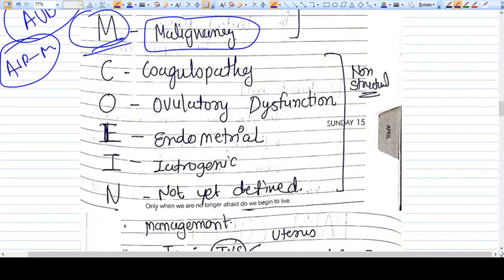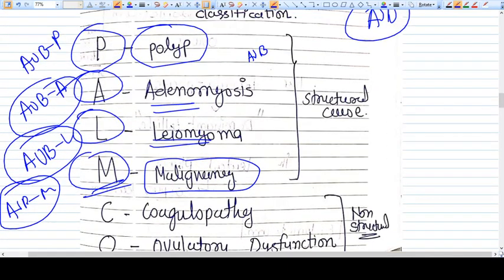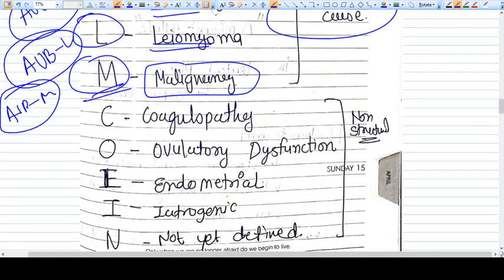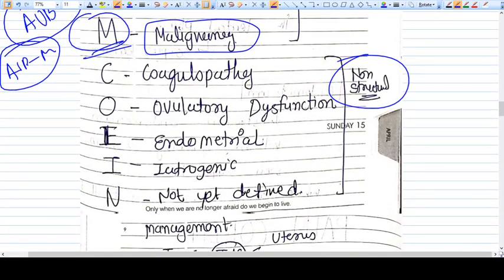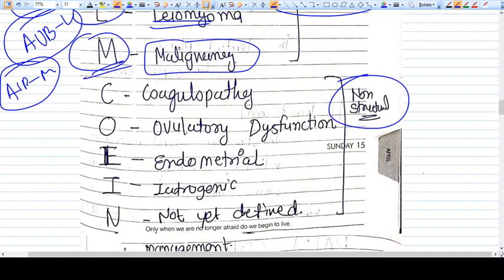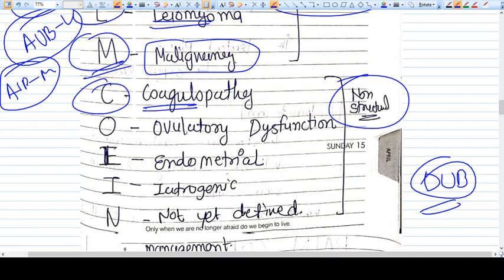Now comes COIN. These are the structural causes - PALM. Now comes the non-structural causes, and in these non-structural causes the DUB will come. C means coagulopathy - bleeding is due to coagulopathy problem. So AUB-C does not come under DUB.